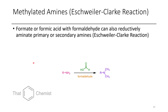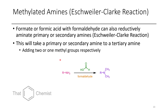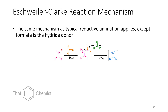Another way to make amines is the Eschweiler-Clarke reaction — the reductive methylation of primary or secondary amines — where the aldehyde used is formaldehyde and the reductant is formic acid. Formic acid also acts as the H+ source, which helps get the chemistry going. If you take a secondary amine you'll get a tertiary amine with one methyl group; if you take a primary amine you'll get a tertiary amine with two methyl groups. The mechanism: first you form an iminium, then formate acts as a hydride donor, making CO2 as a byproduct, reductively methylating the amine.